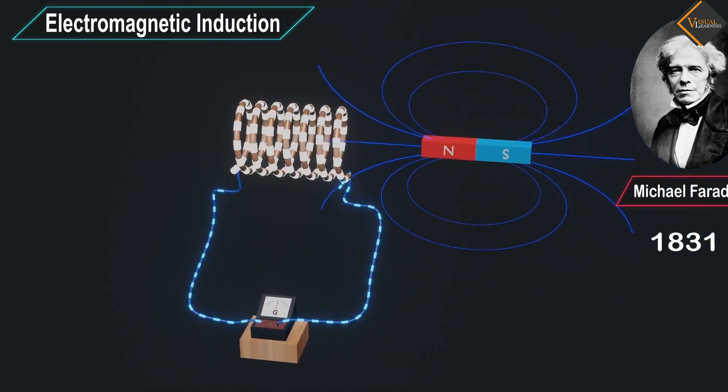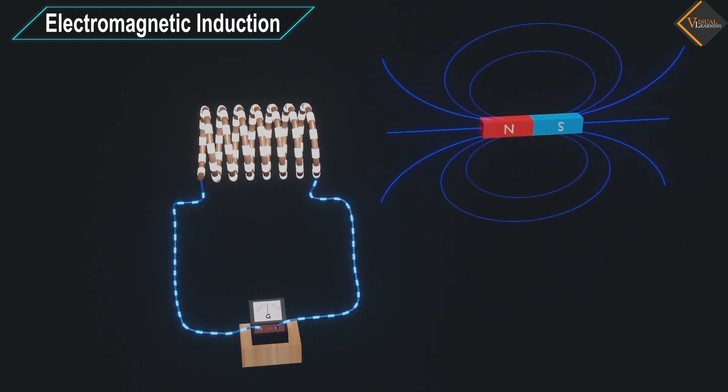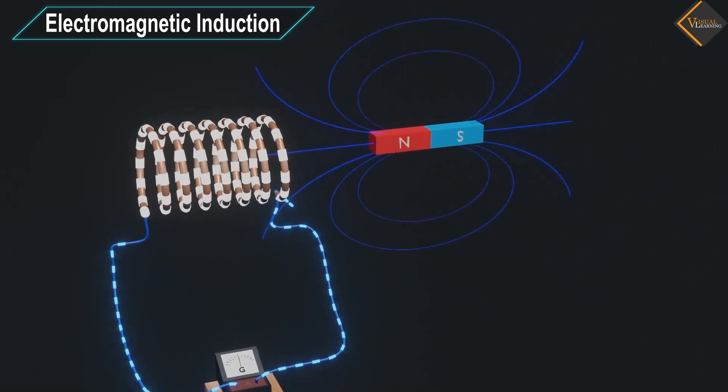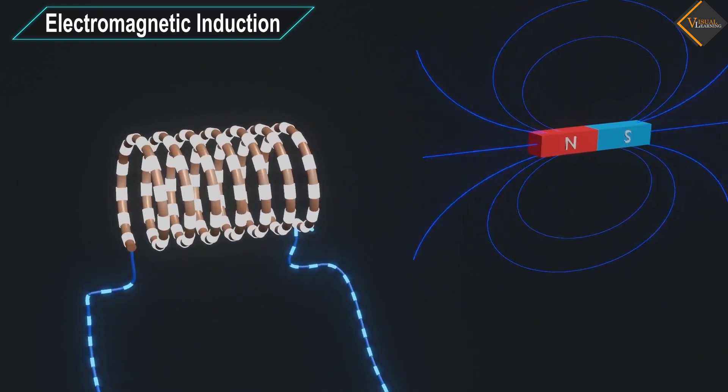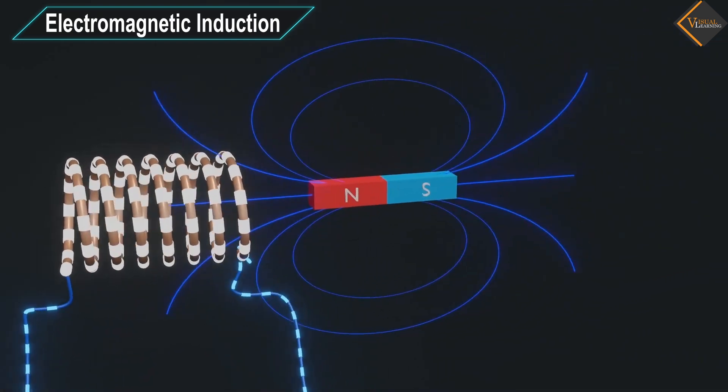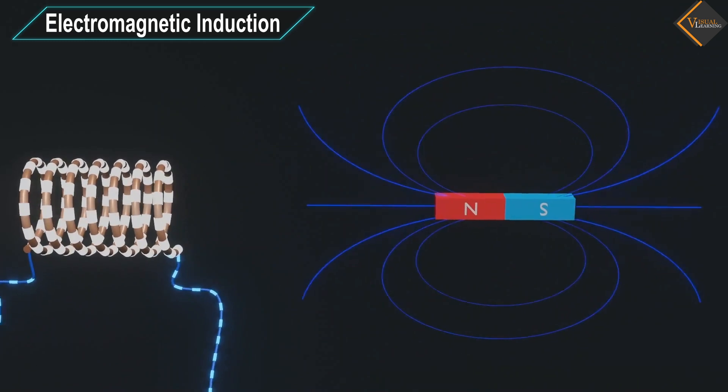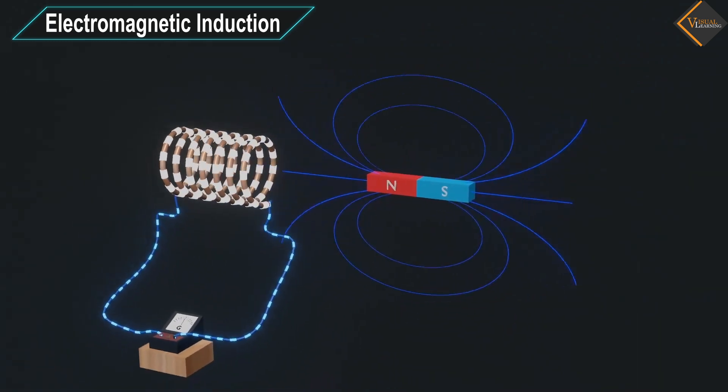Electromagnetic induction is a phenomenon in which the relative motion between a conductor and a magnetic field produces current across the conductor. Let's understand this phenomenon by this animation.